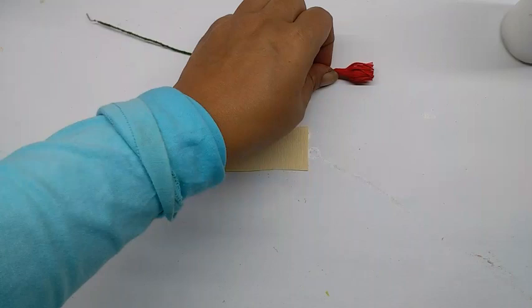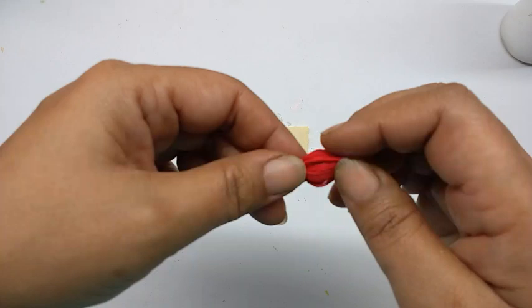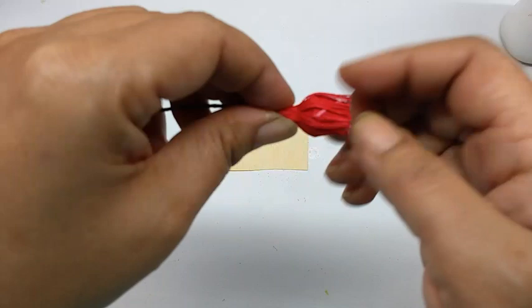Now take this and just hold the top of the stamen all together, and then press it down so it forms this bulged out shape.